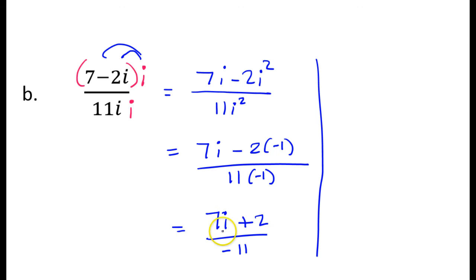So the final answer, we are to write the i term always second. So this would be the same thing as 2 plus 7i over negative 11. So this is the final answer.